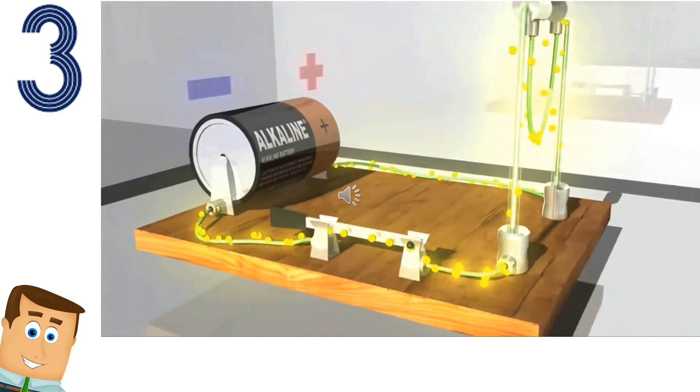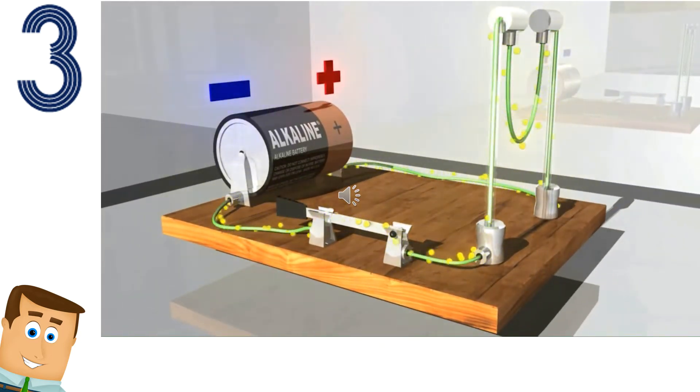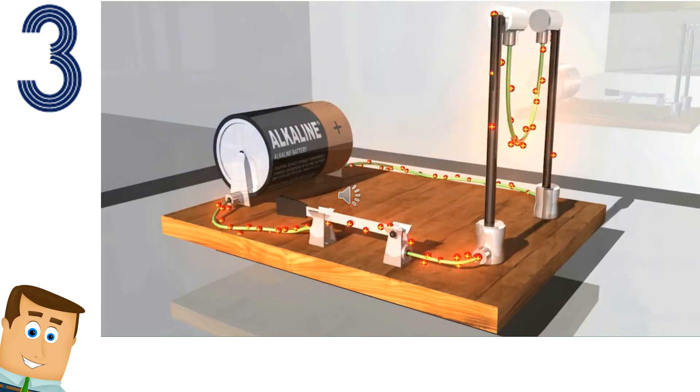Va a haber una transmisión de corriente de electrones de negativo a positivo, de iones positivos de positivo a negativo. Esa es la corriente convencional.